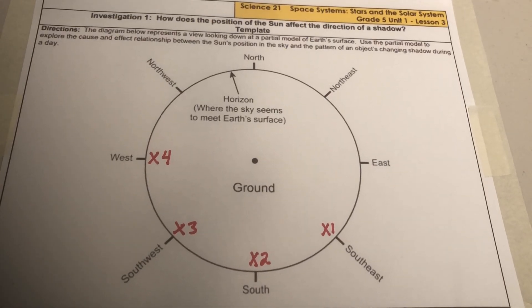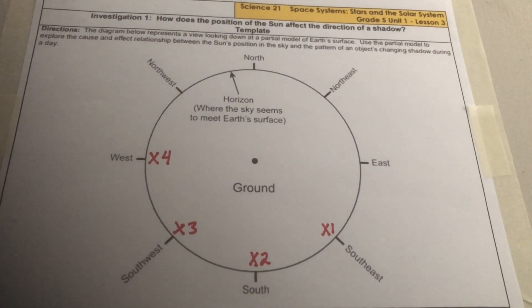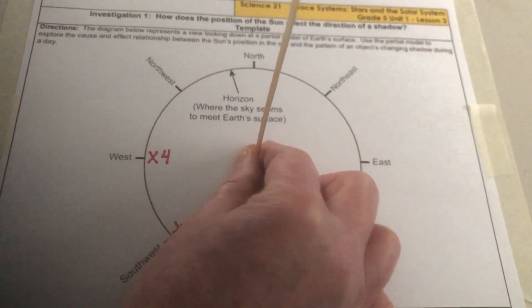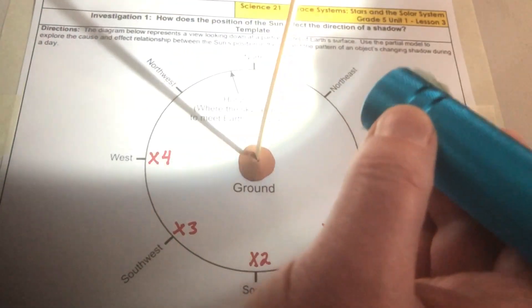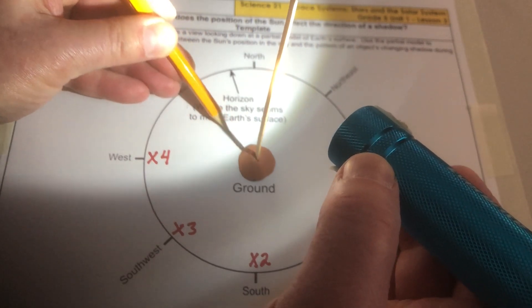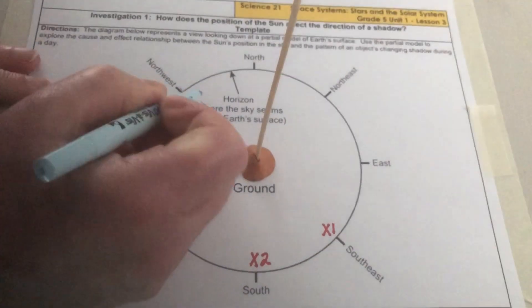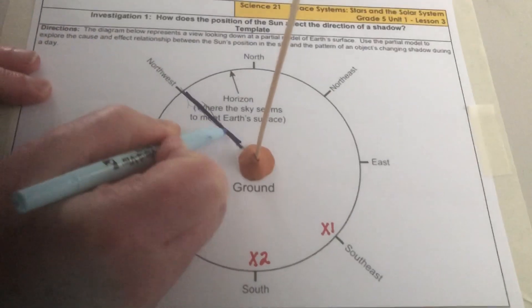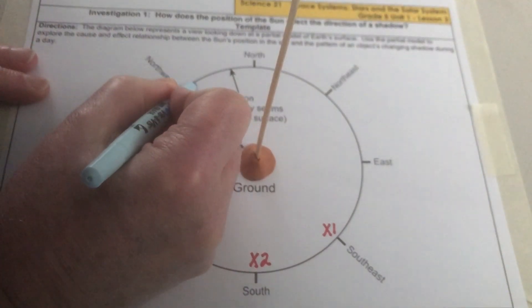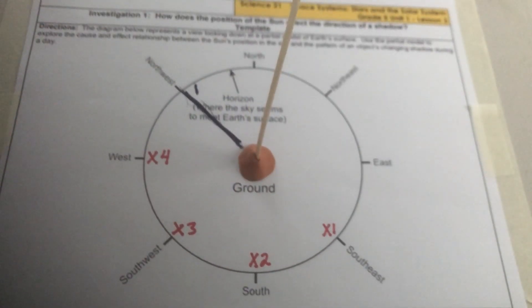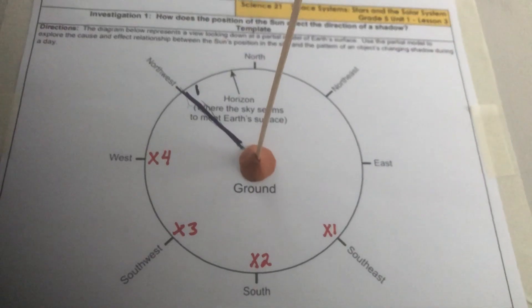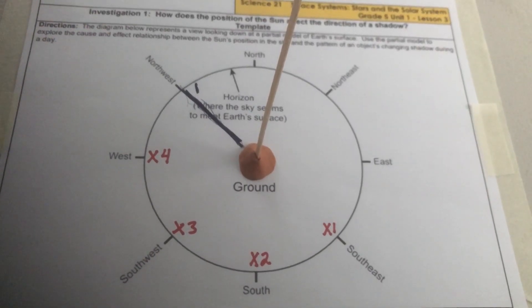Now I'll turn off the lights in the room so the shadow will be easier to see and so that we won't have any other shadows. Now I will hold the flashlight over position x1. Here is our stick, and now we can see the shadow of the stick going from here to there. I will now trace over that line with my marker and label it position 1. Draw the shadow on your diagram and label it position 1. Your teacher will give you time to do this by pausing the video.